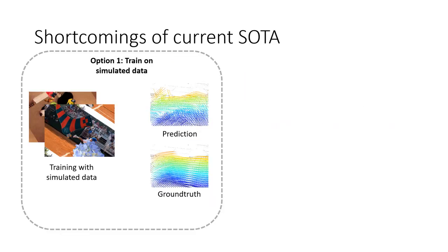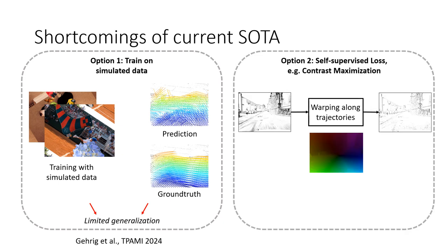The first option is to use simulated data. On the left you see the results of a model that trains on simulated event data and predicts on real data. The results do not capture the scene motion correctly. In other words, the example shows limited generalization capabilities.